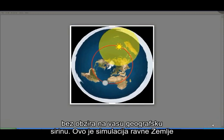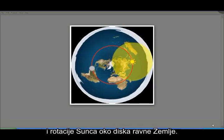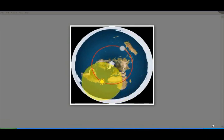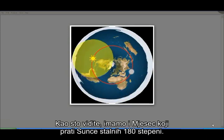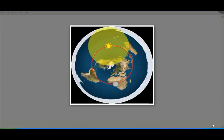This is a flat earth simulation of the Sun's rotation around the disk of the flat earth. As you can see, we've also got the moon chasing the Sun, permanently 180 degrees from the Sun. Apparently that's about as high-tech as a flat earth simulation gets. Anyway, I digress.